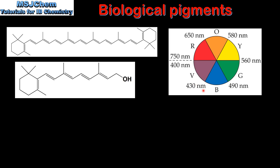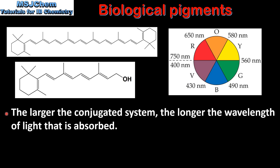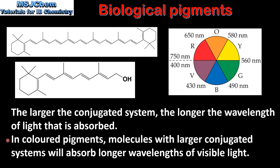By looking at the color wheel we can see that blue light has a longer wavelength than violet light. So the larger the conjugated system, the longer the wavelength of light that is absorbed. In colored pigments, molecules with larger conjugated systems will absorb longer wavelengths of visible light.